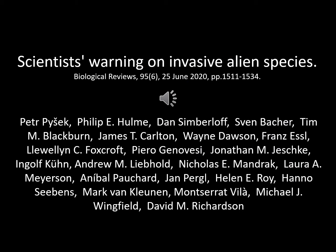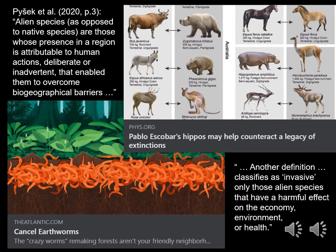Otero et al. also describe that alien species are the second most common threat associated with extinction, which is why I decided to include the recent warning by scientists on the topic. Let us start with some definitions. From Pisek et al., page 3: alien species, as opposed to native species, are those whose presence in a region is attributable to human actions — deliberately or inadvertently — that enable them to overcome biogeographical barriers. Another definition classifies as invasive only those species that have a harmful effect on the economy, environment, or health.